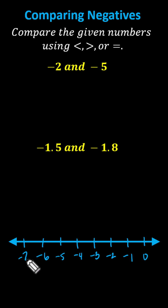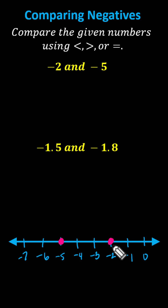Now we'll plot the given values of negative 2 and negative 5. Here's negative 2, and here's negative 5. By comparing values on the number line, the value on the right will always be greater than the value on the left, or the value on the left will always be less than the value on the right. As we're comparing negative 2 and negative 5, and negative 2 is to the right of negative 5, negative 2 is greater than negative 5.